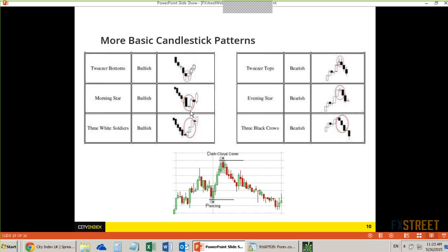For the evening star: you have this spinning top up here — this pattern in its entirety is called an evening star. Once you see that, and only if this occurs at resistance, then you have a potential trade. I won't get into the trade right at resistance. I will wait for a breakdown below this pattern — that shows short-term momentum going in the direction I think it's going — and then I'll get into a short trade. Once I'm in, I place my stop loss above the high of this pattern.